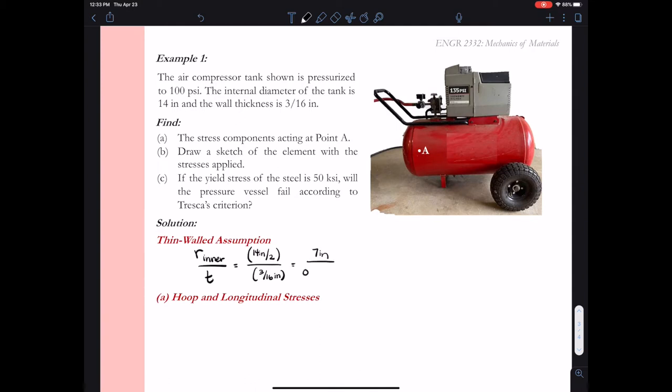Doing that calculation, we see the inner radius is 7 inches and the thickness is 0.1875 inches, and I get the value 37.33. I compare this to my cutoff limit of 10. I want to make sure I'm greater than or equal to 10 so I can use thin-walled analysis. As you can see, we're much greater than 10, so the thin-walled analysis will apply.